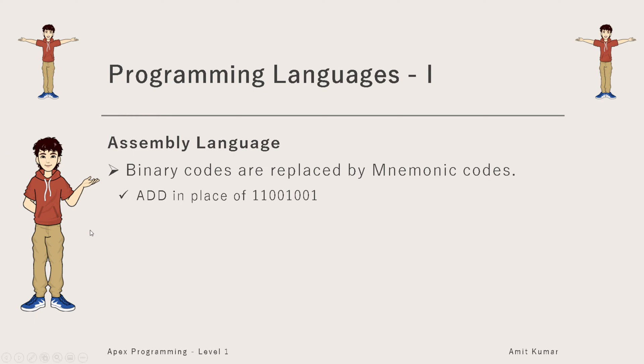ADD is a mnemonic code. Now suppose in binary numbers or in machine language, if 11001001 means addition, what we did is we replaced this binary code with a mnemonic code ADD, which is much more meaningful for the programmers.